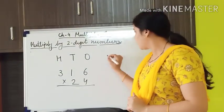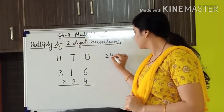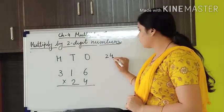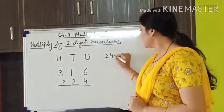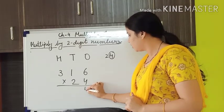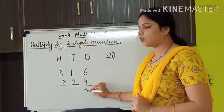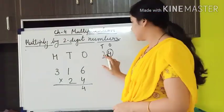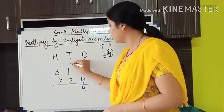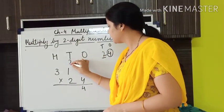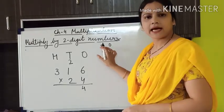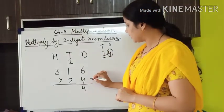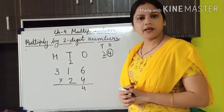4 sixes are 24. From 24, we write the 4 at the 1s place, and the 2 is carried forward to the 10s place. Multiplication with this digit is done.